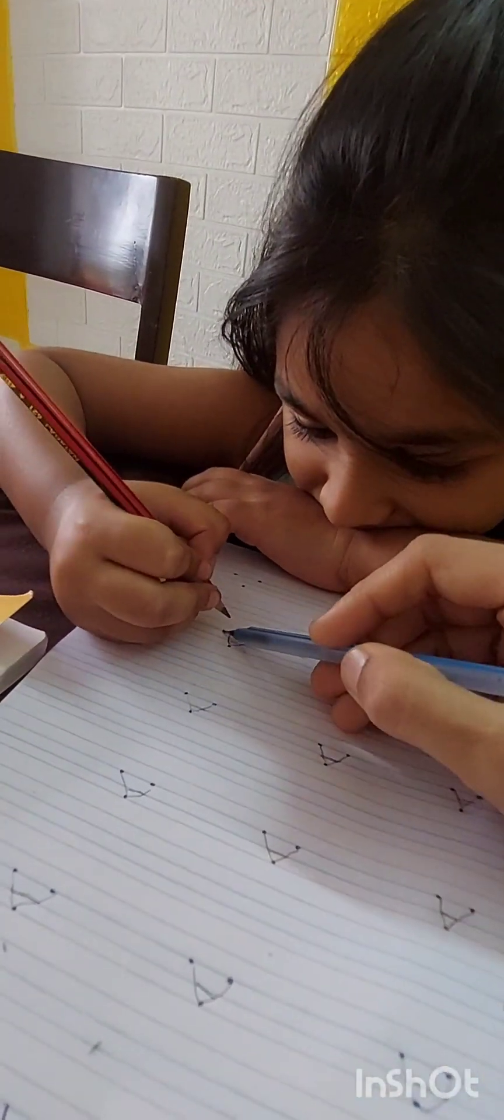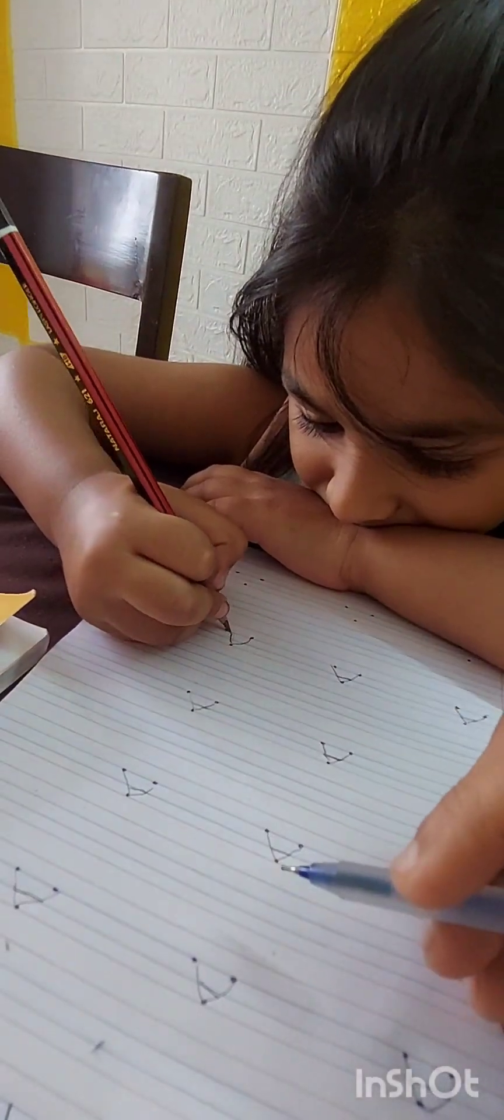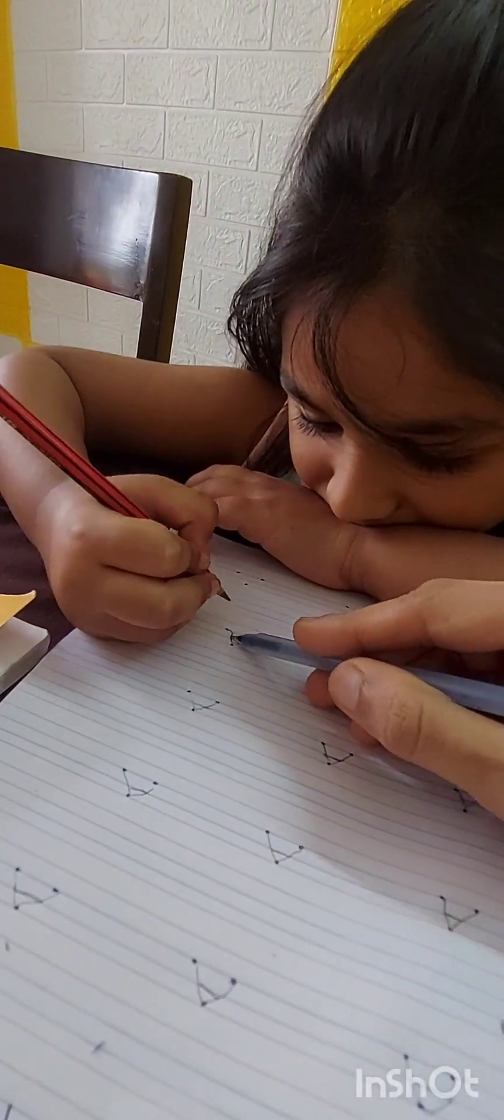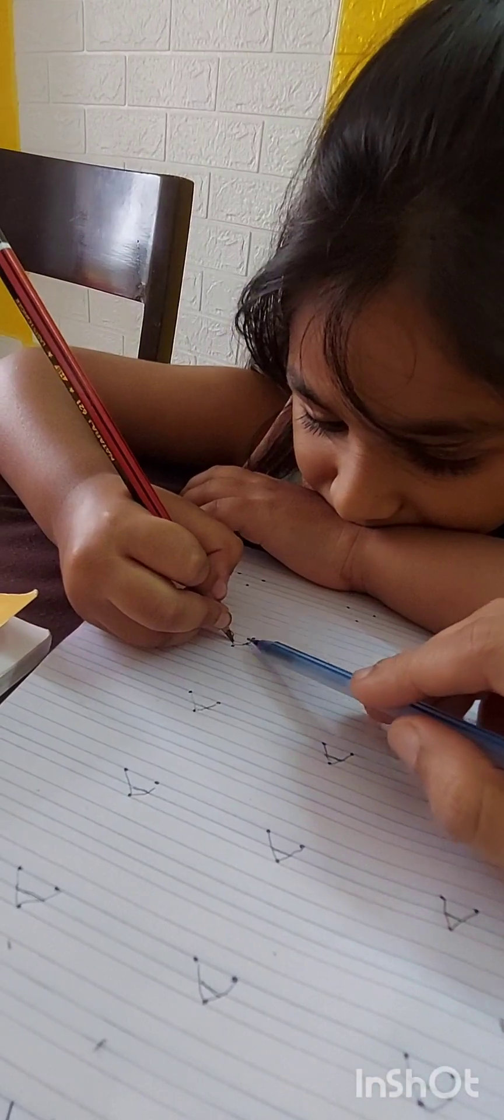One more slant line. Keep your pencil point here and do slant line. Keep your pencil point here. Keep your pencil point here. Come on. Uh oh. Come on, come on. Make slant line. One more slant line. And a sleeping line. From here, from here.